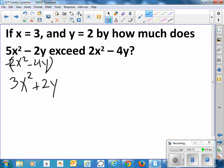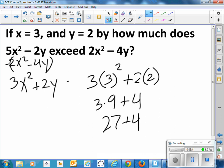So I could find out how much larger it is. I just have to plug in the values. x is 3, and y is 2. So 3 squared is 9. 3 times 9 is 27. 27 plus 4 is 31. So 5x² minus 2y exceeds 2x² minus 4y by 31 if x is 3 and y is 2.